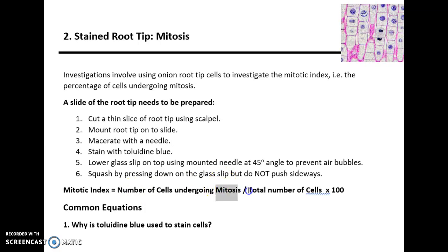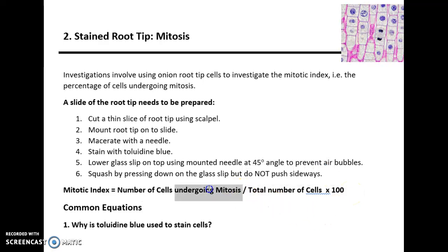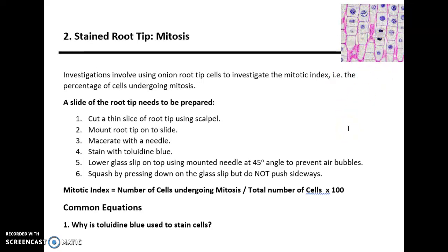Squash down slightly by pressing on the glass slip but do not push sideways. Then observe the slide under a light microscope, counting the number of cells undergoing mitosis and the total number of cells, and multiply by a hundred. The stages of mitosis are prophase, metaphase, anaphase, and telophase. In prophase, chromosomes have coiled, condensed, and become shorter and fatter.